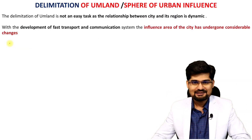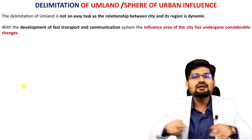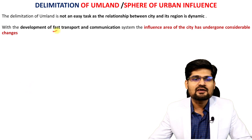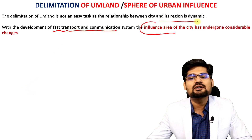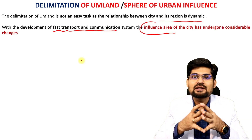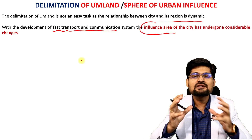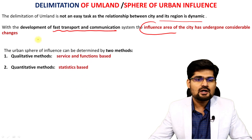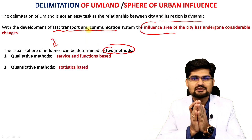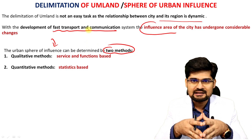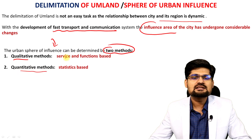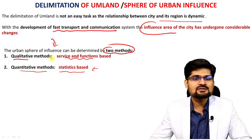Now, how do we define the limit of the sphere of influence — that is, the delimitation of umland? There are different methods to study it. Development of fast transport and communication systems has influenced this definition; distances have become shorter because of technology, and messages can be communicated through the internet. Urban sphere of influence can be determined by two methods: qualitative techniques based on observation, and quantitative techniques based on statistical and mathematical analysis.